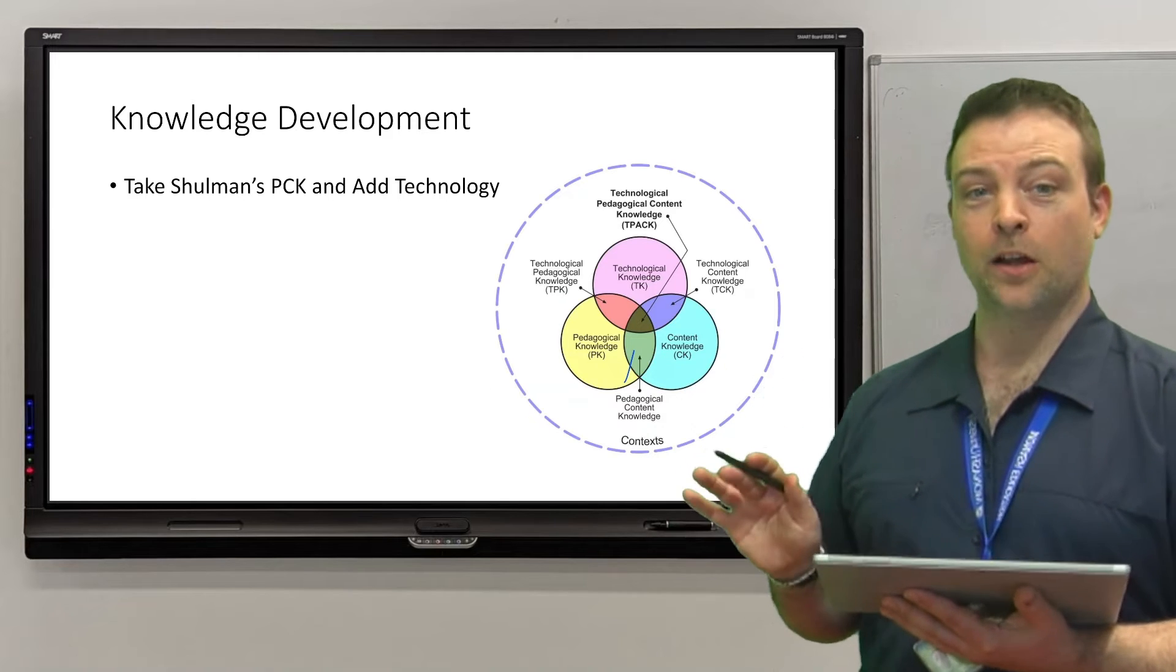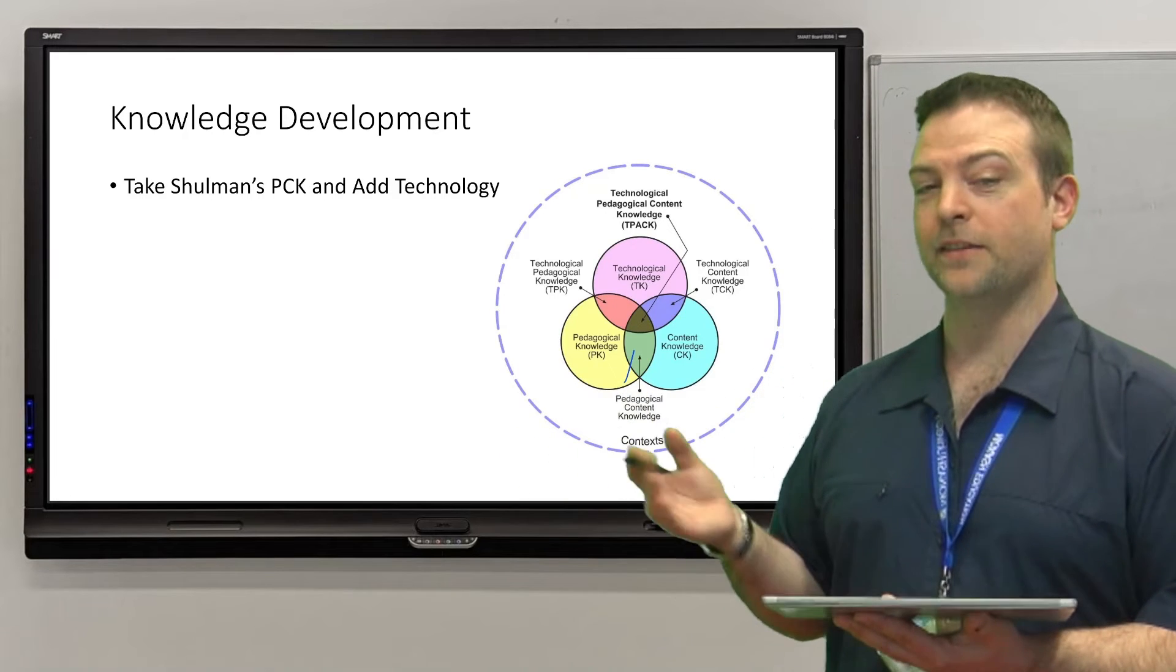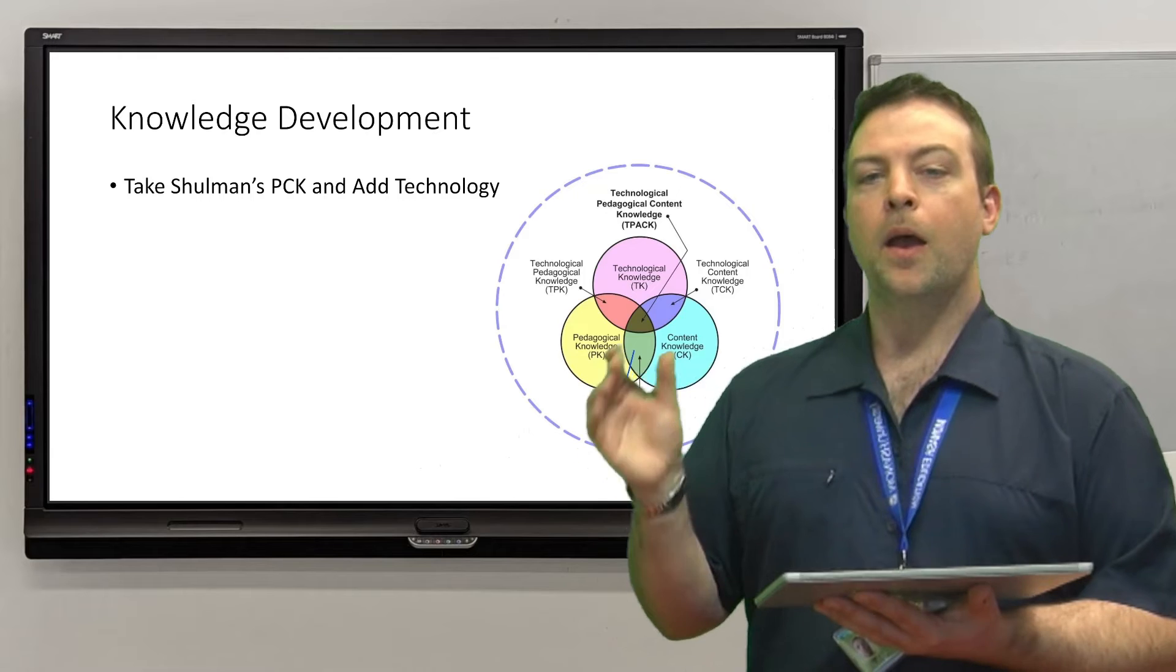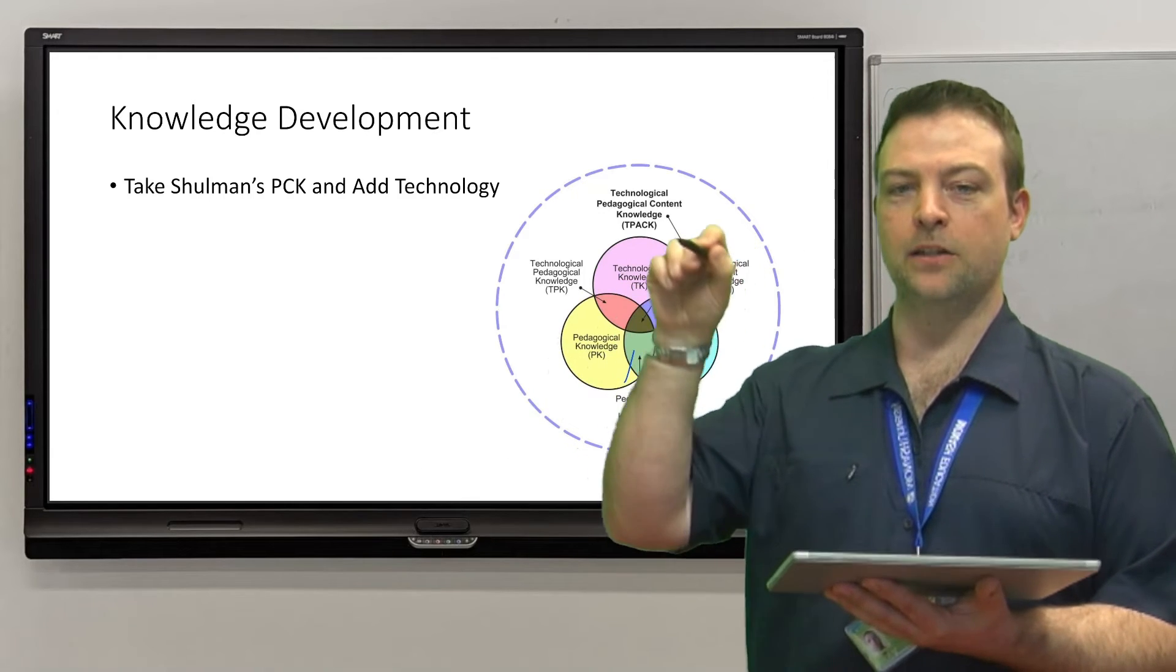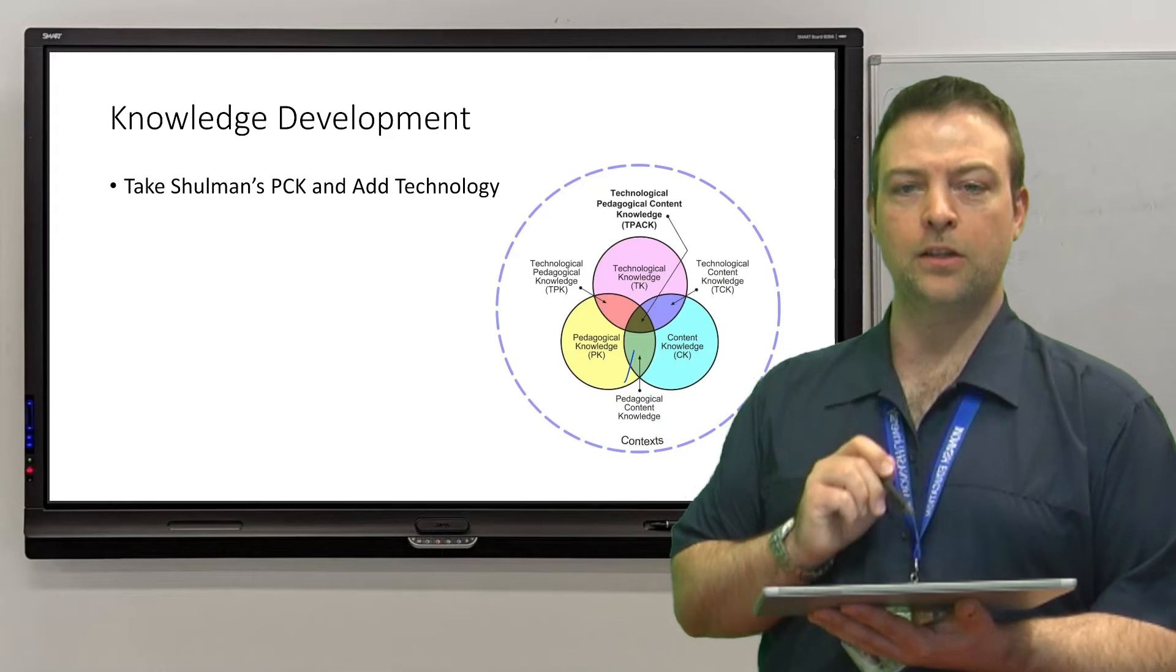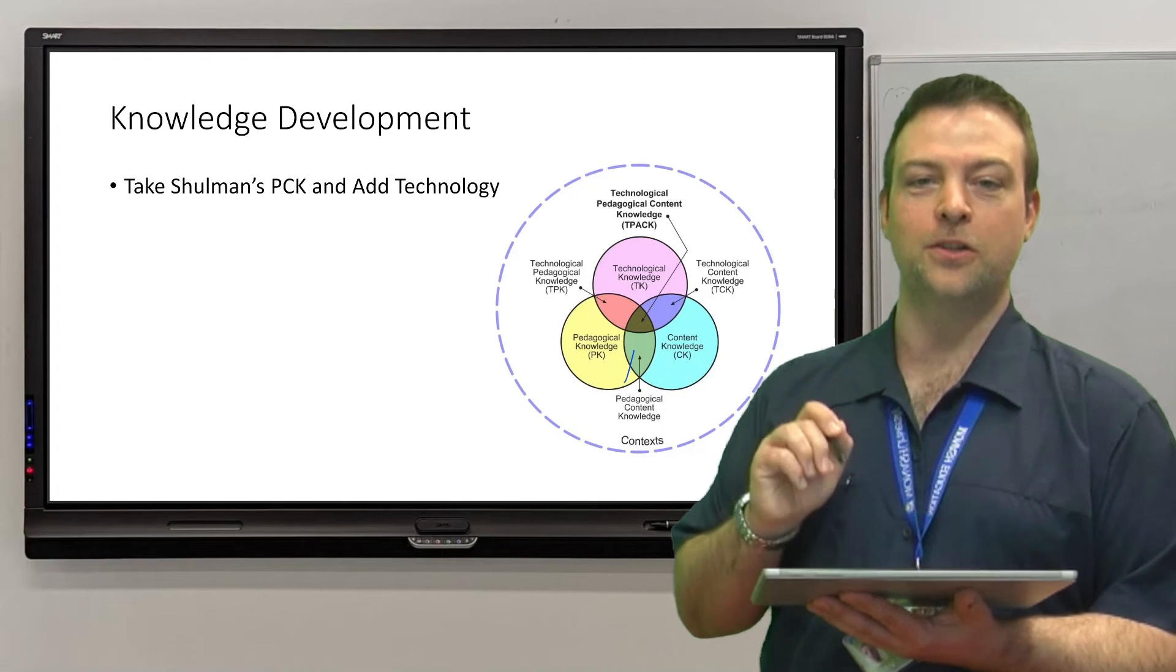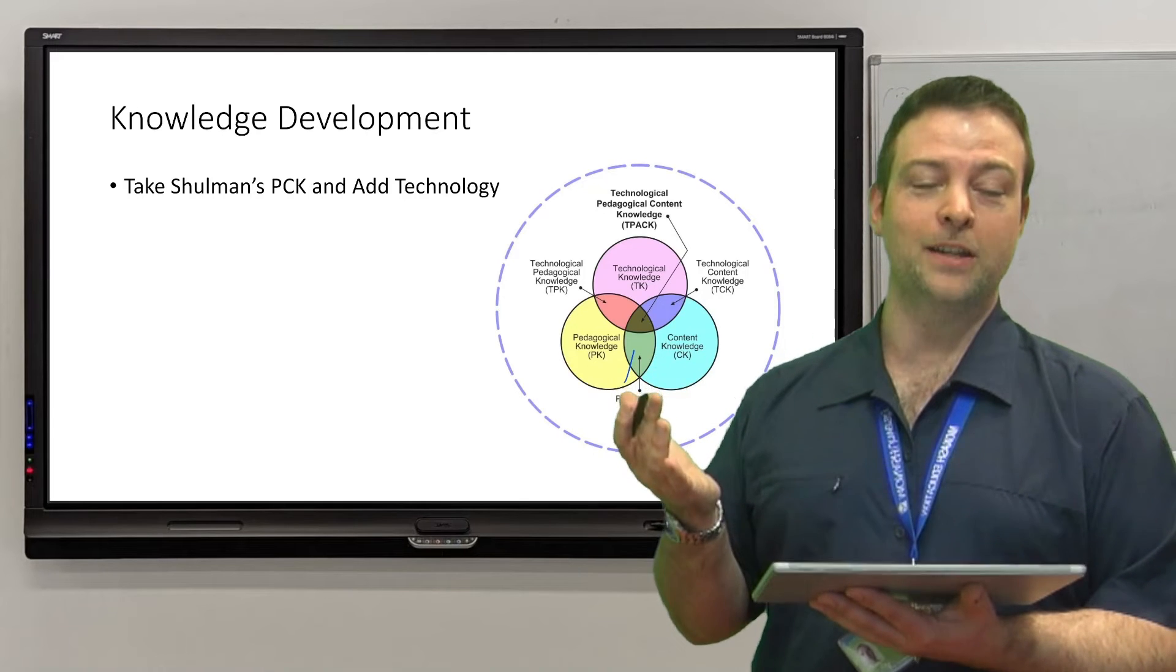So Shulman's knowledge domains mostly talk about pedagogical knowledge and content knowledge and knowledge of the learner and things like that. And one of the most important ones arguably is PCK, pedagogical content knowledge, and I've been working on that. But more recently there's been an addition to the model of technological knowledge and it fits as a Venn diagram like this. So you end up with technological pedagogical knowledge and technological content knowledge and technological pedagogical content knowledge, and because that is such a mouthful to say we just call it TPACK.